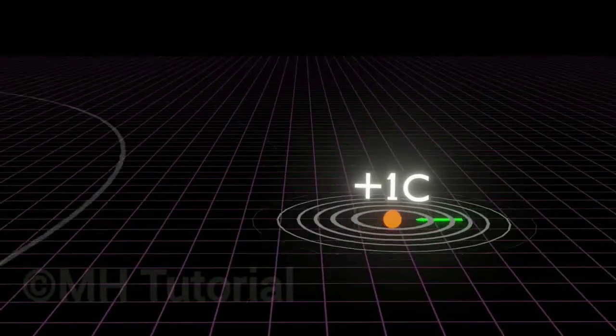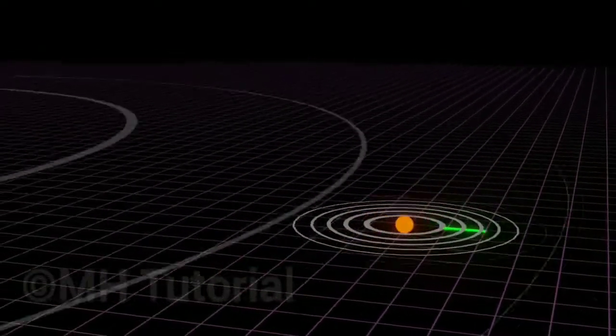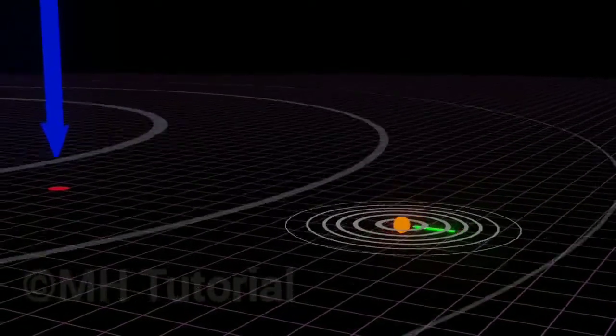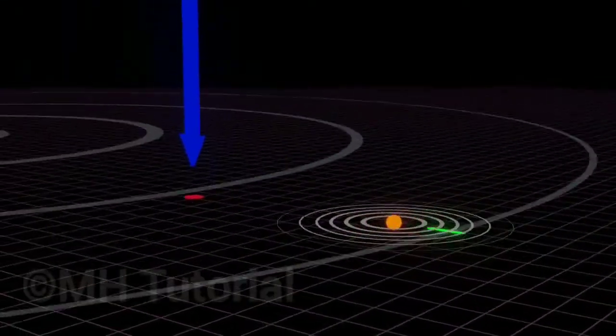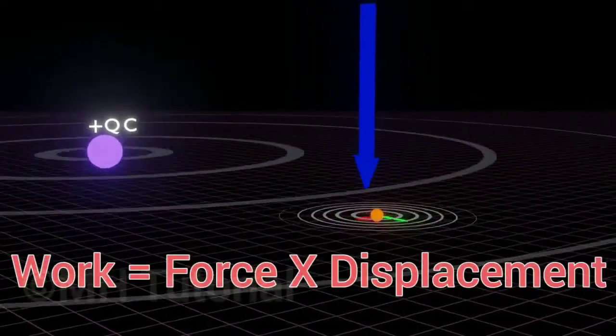As you're pushing the point charge against the outward repulsive force, you are actually performing mechanical work. Coulomb's force is directed radially outwards and displacement is radially inwards. Hence, the force and displacement are along a straight line, thus the work done is force times displacement.